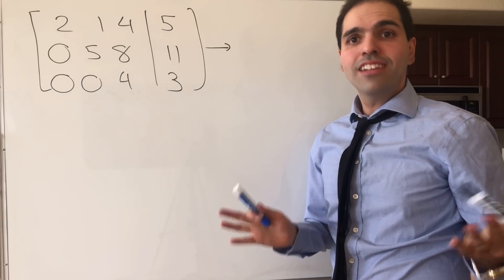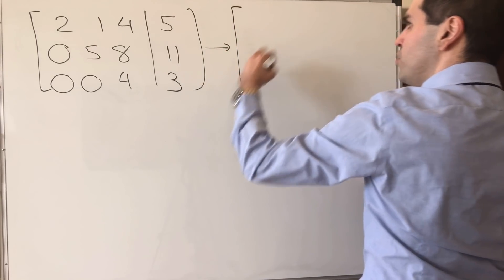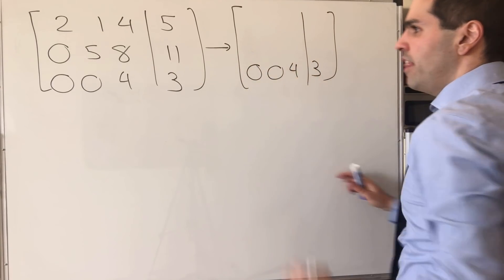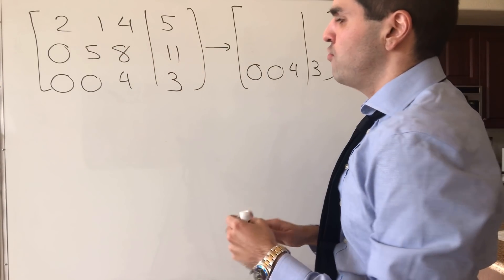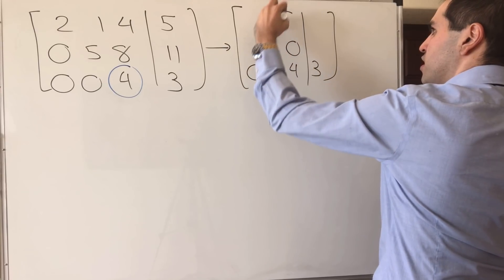Now, for the back substitution, similar to before, first of all, you keep the last row, 0, 0, 4, 3. And then, everything above this 4, you turn it into 0. So, 0, 0.